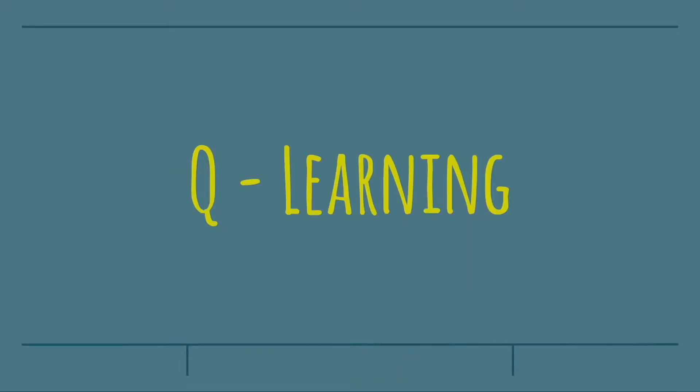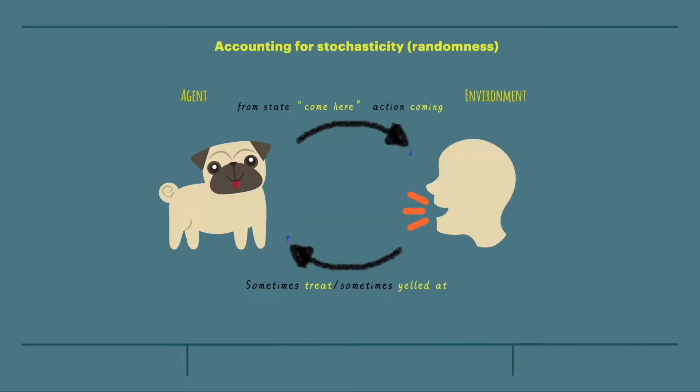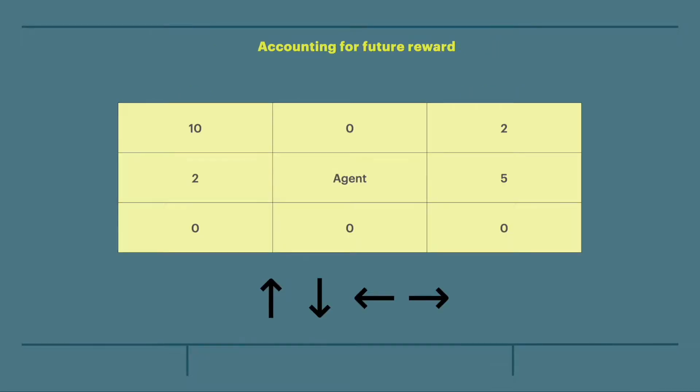Now enter Q-learning, which helps us train machines in more practical applications. For example, in the real world we need to account for stochasticity. How does the dog value the command 'come here' when half the time you give it a treat, and the other times you're yelling at it? Another question Q-learning answers is how to account for future reward.